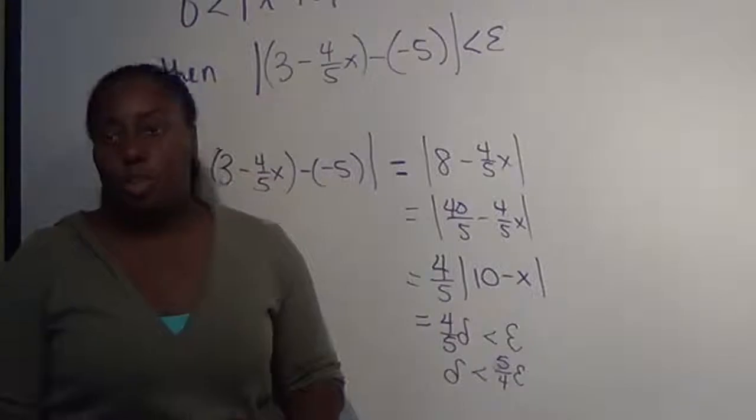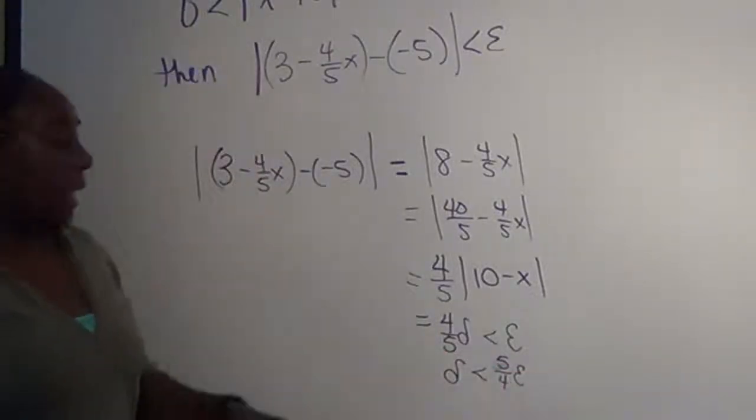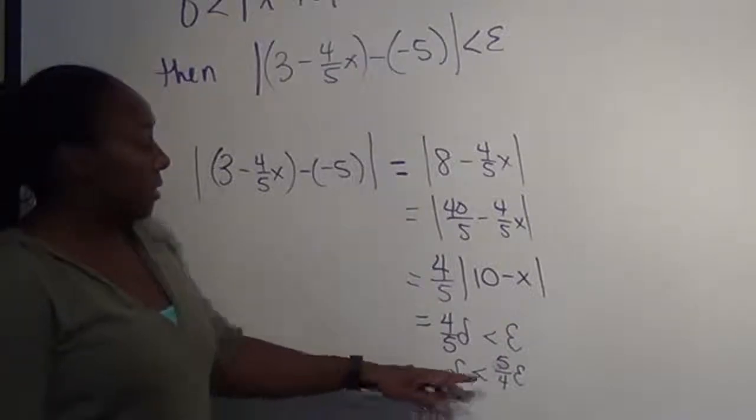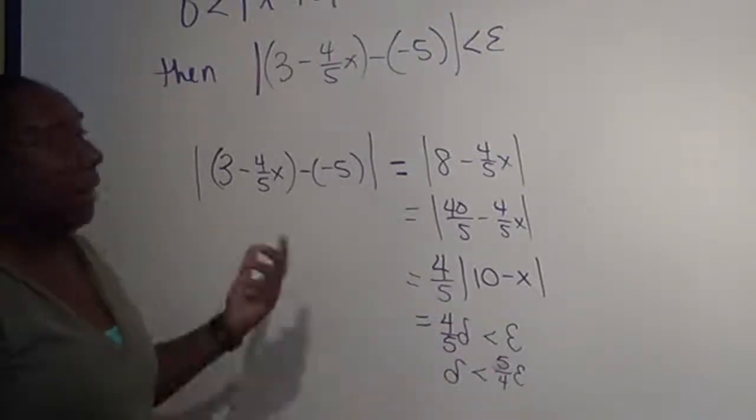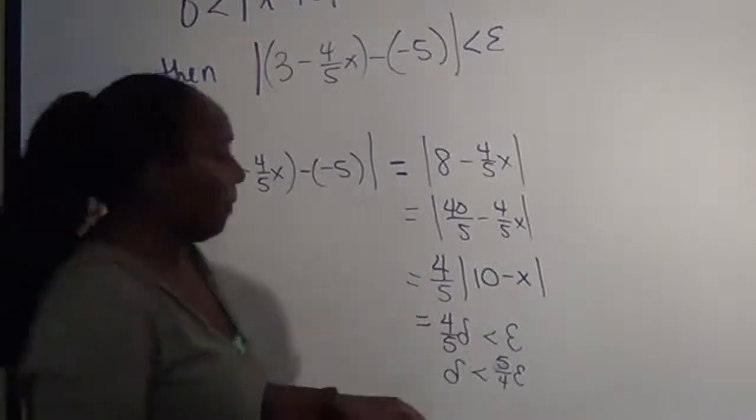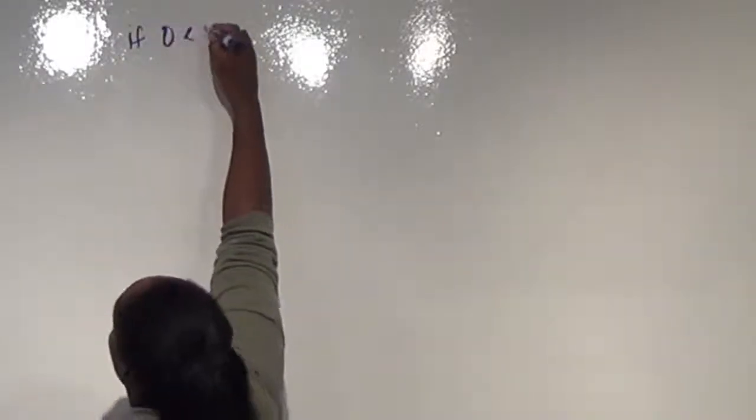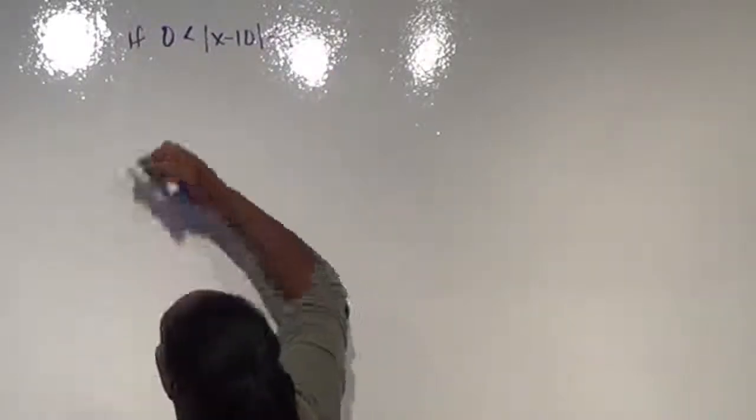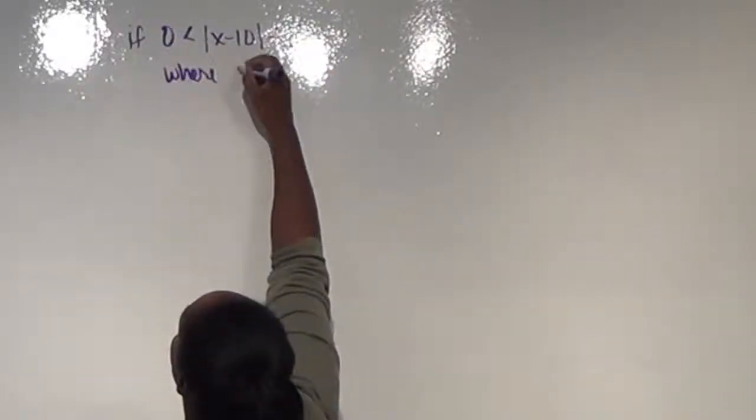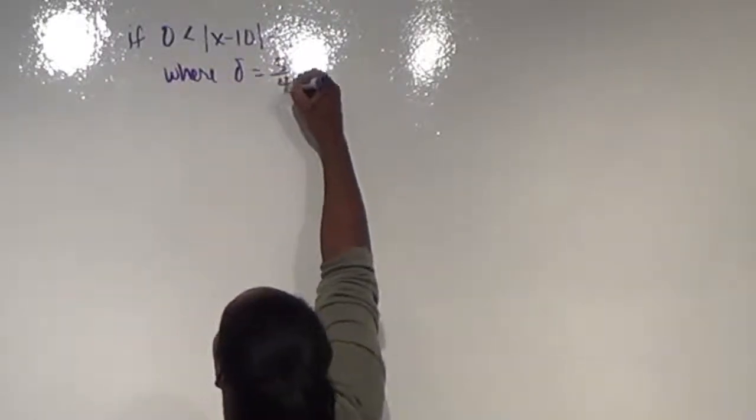So now we have a relationship between our delta and our epsilon. And here, as long as delta is less than this, so we can actually make this the biggest delta is, and look and see what happens. So to show that this works, if 0 is less than |x - 10|, which is less than delta, where delta is 5/4 epsilon,